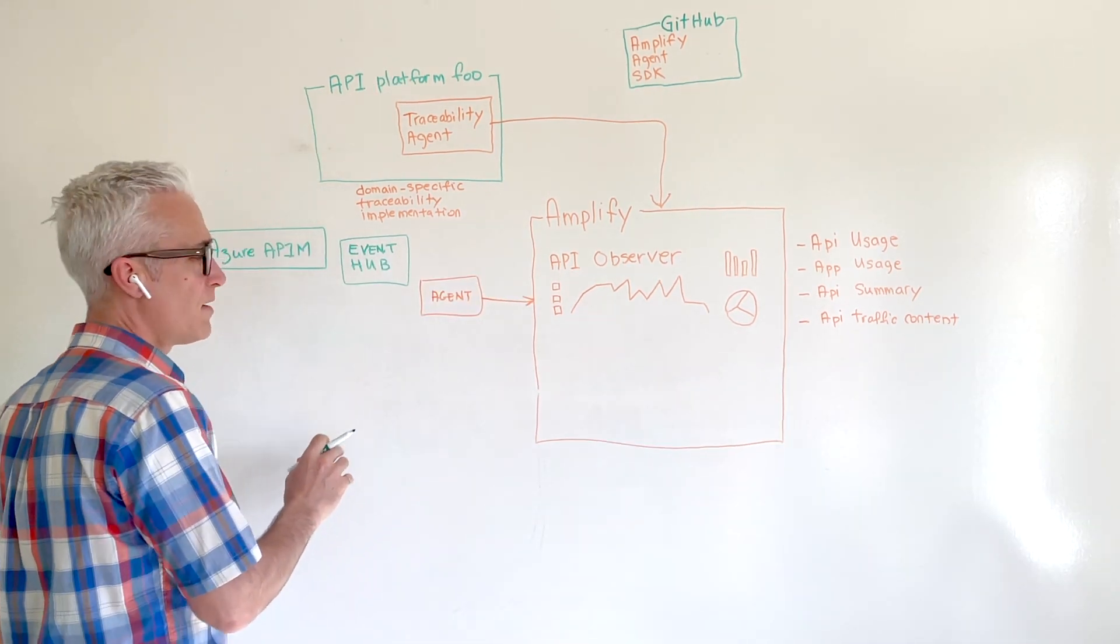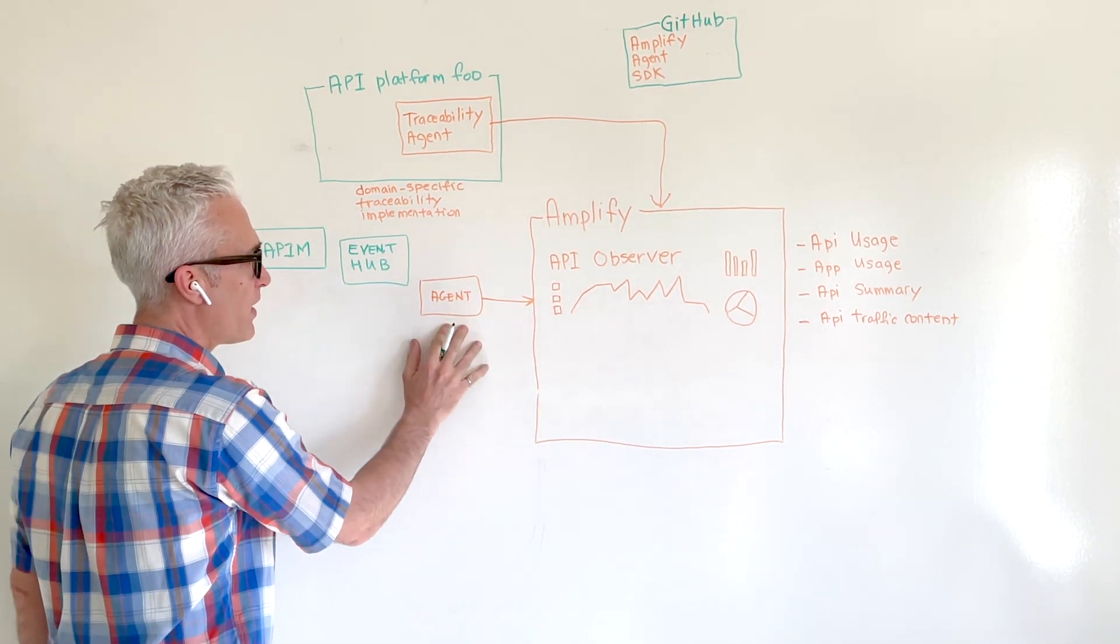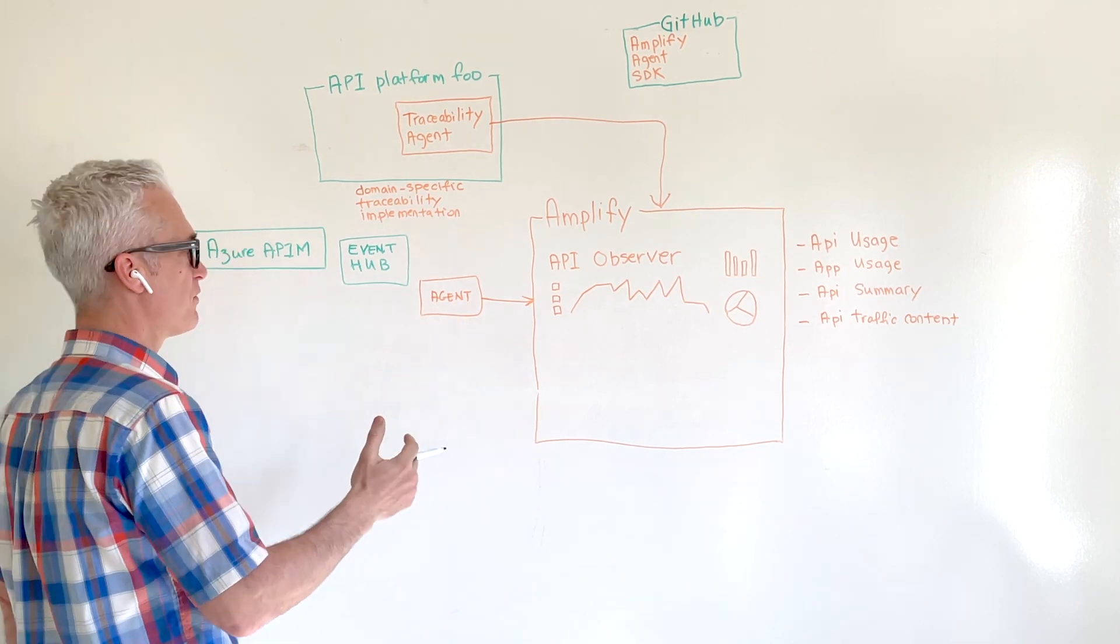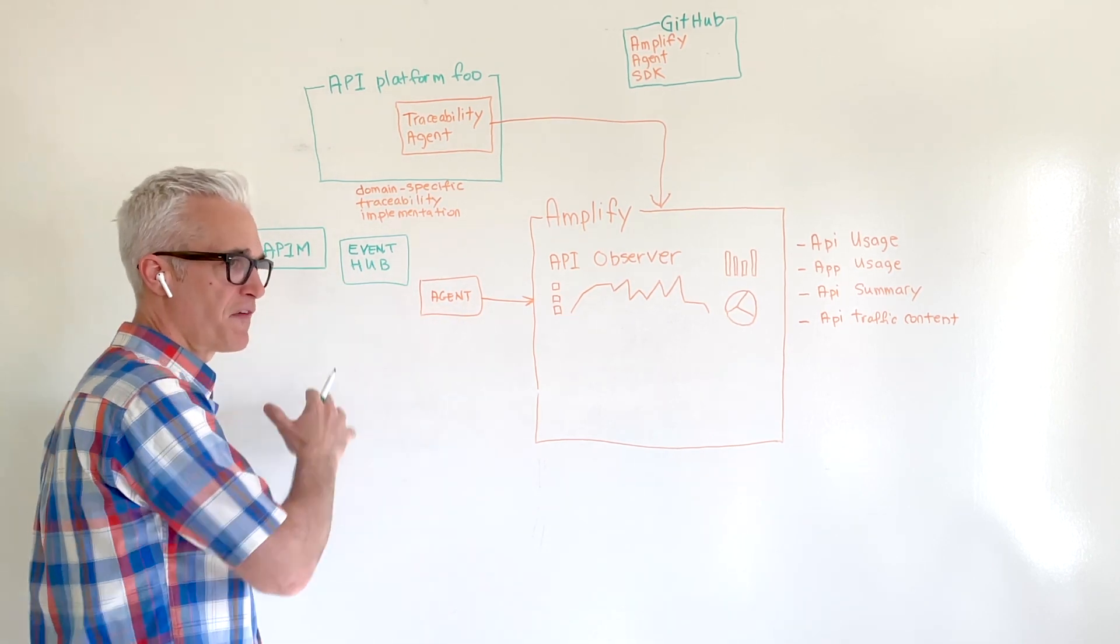For example, if you're using Azure API M, our agent would be picking up the information via Azure Event Hub. This is a very Azure effective way of achieving this API traffic capture.